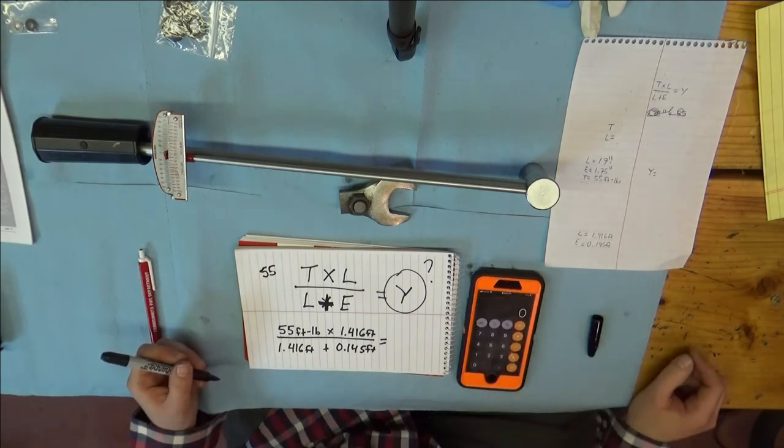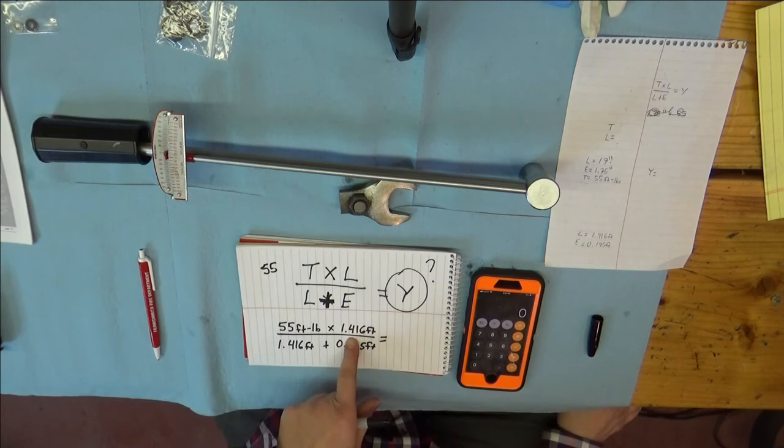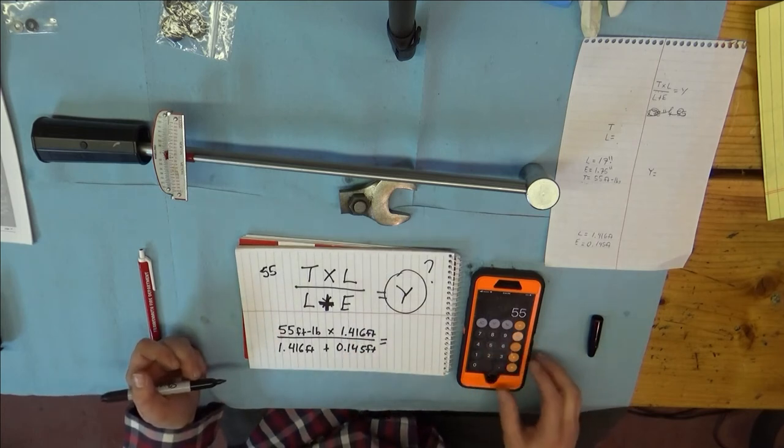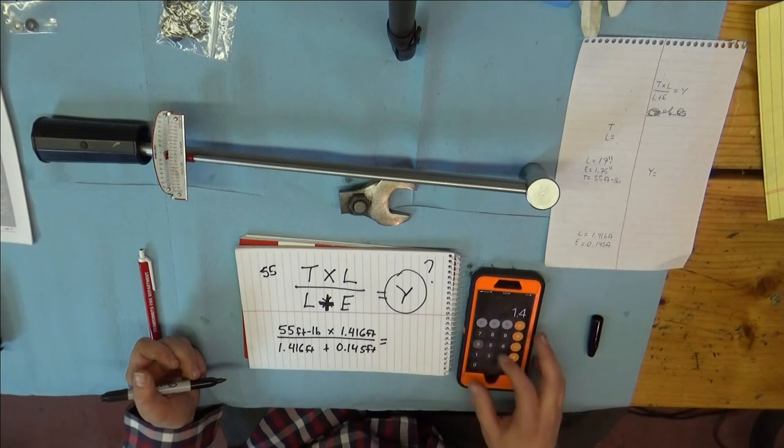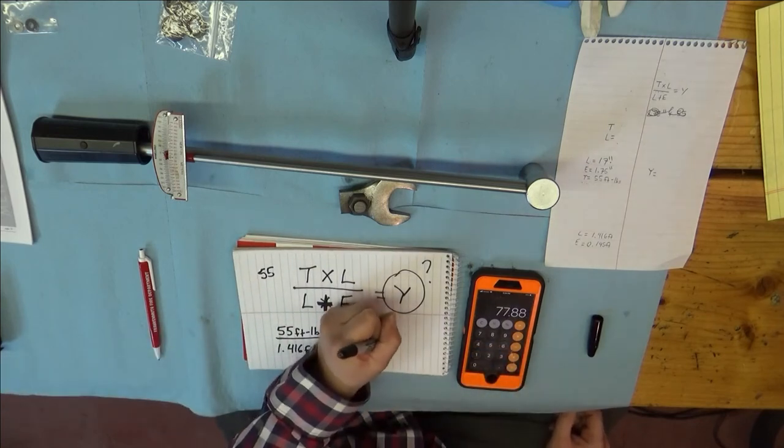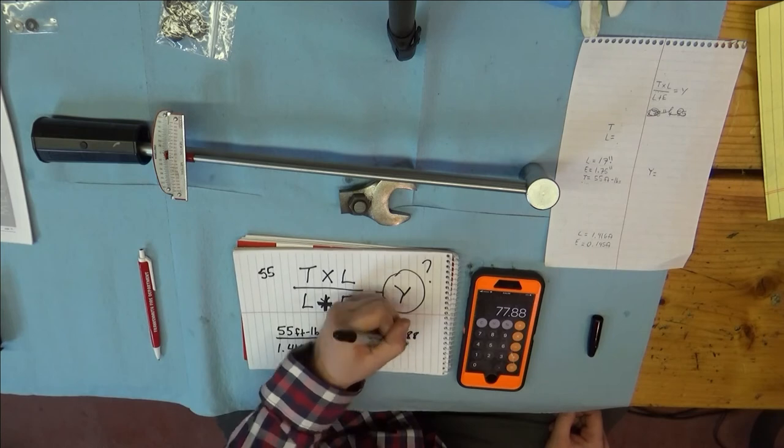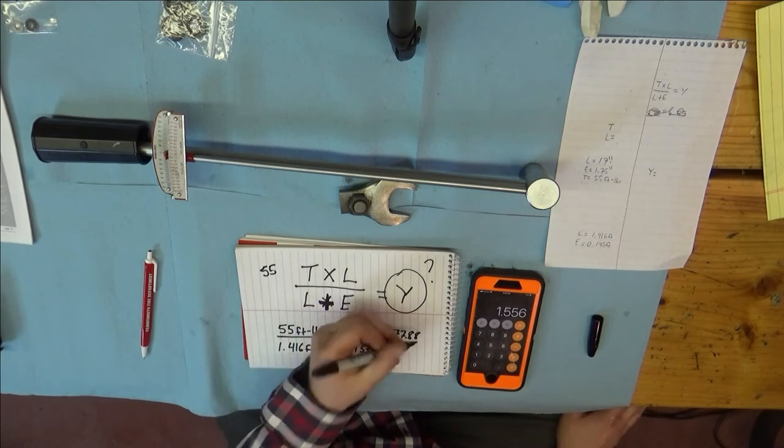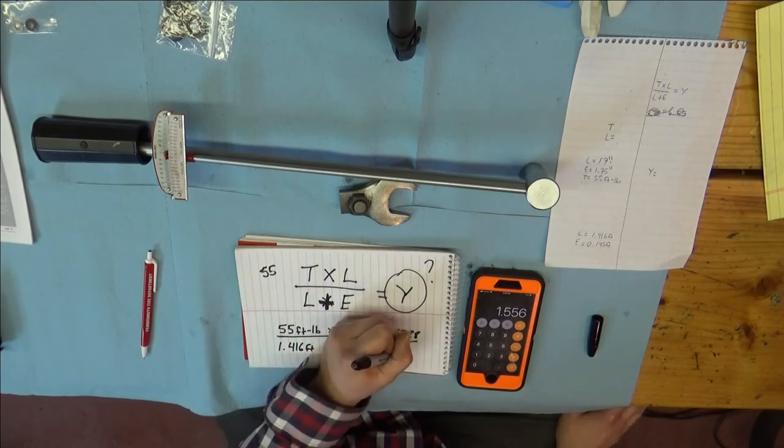And how math works is you do 55 times this top one first. So 55 times 1.416, that's 77.88, divided by this plus this, 1.556.